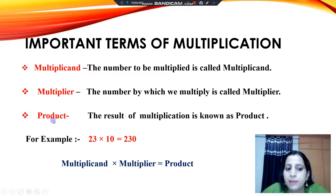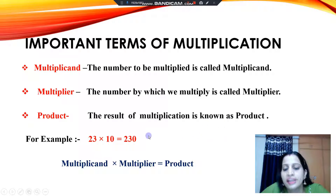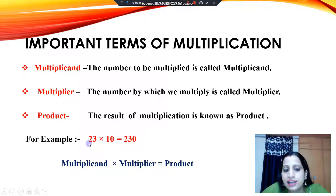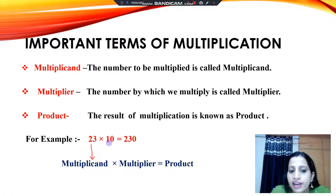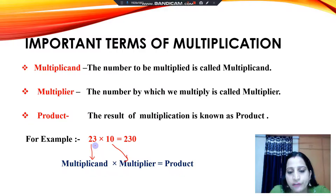The third important term is product. The result of multiplication is known as product. Whenever we multiply any two numbers, our result is known as product. For example, here the two numbers are 23 multiplied by 10, and the answer is 230. So here 23 is the multiplicand, 10 is the multiplier, and 230 is our product.